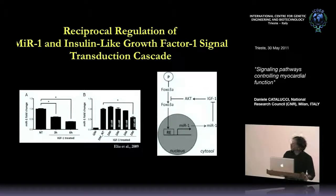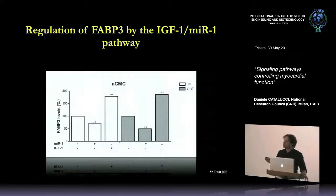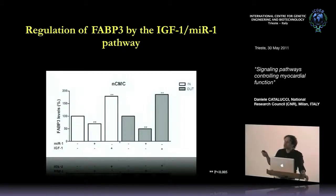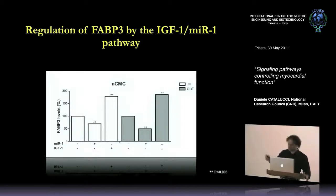We then performed experiments to see whether FABP3 is part of the same feedback loop. In neonatal cardiomyocytes, we measured FABP3 levels at cellular and extracellular levels. Adding microRNA-1 reduces FABP3 protein as expected, but when we introduce IGF-1 — which negatively represses miR-1 transcription — we obtain a strong increase in FABP3. This confirms that acting on the IGF-1 pathway to inhibit miR-1 leads to an increase in FABP3 protein.